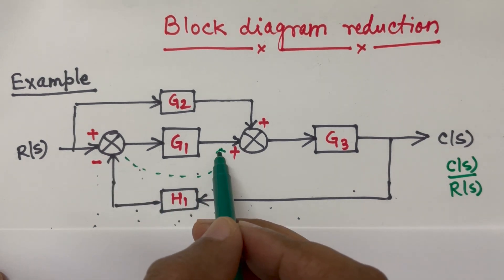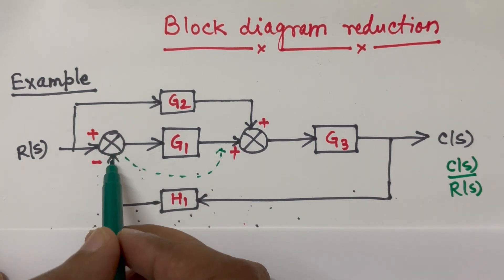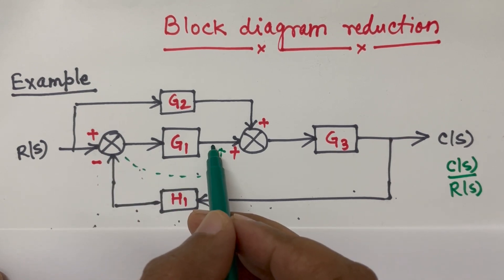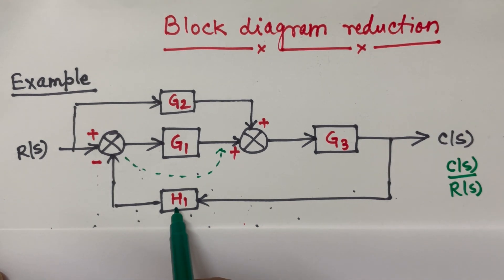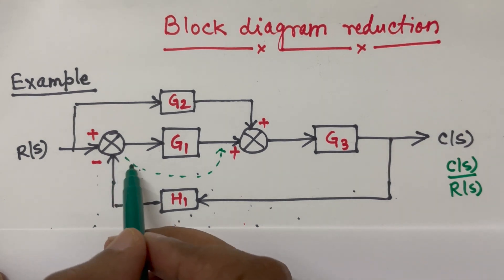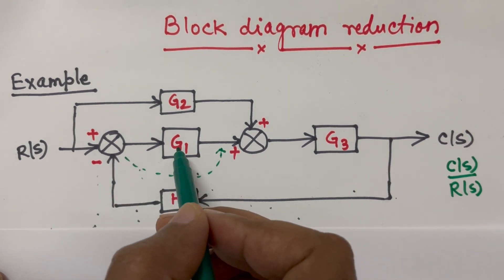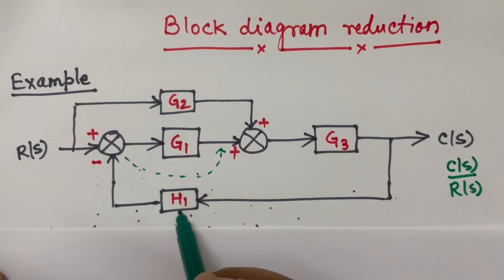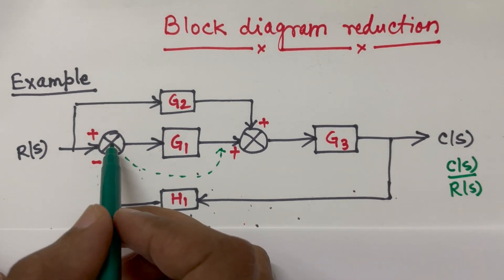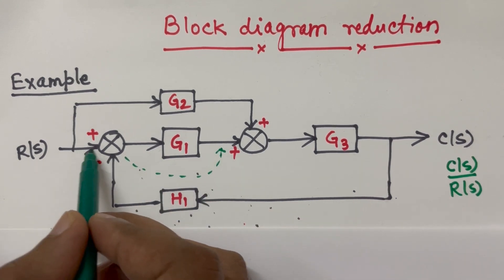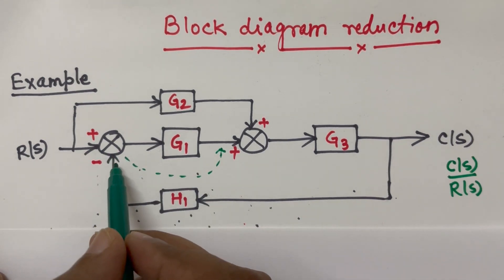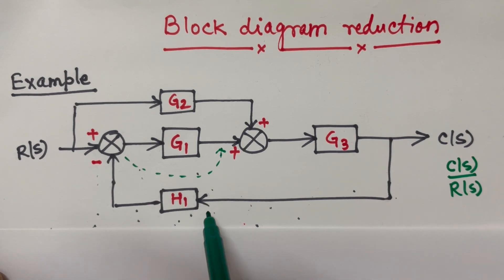So when we shift this, whatever is the input to this summing point will also be shifted there and the input is over here H1. Since we are moving left to right, this G1 will be multiplied in H1. So now I will be making this summing point over here and removing this, and this block H1 will change to G1 H1.